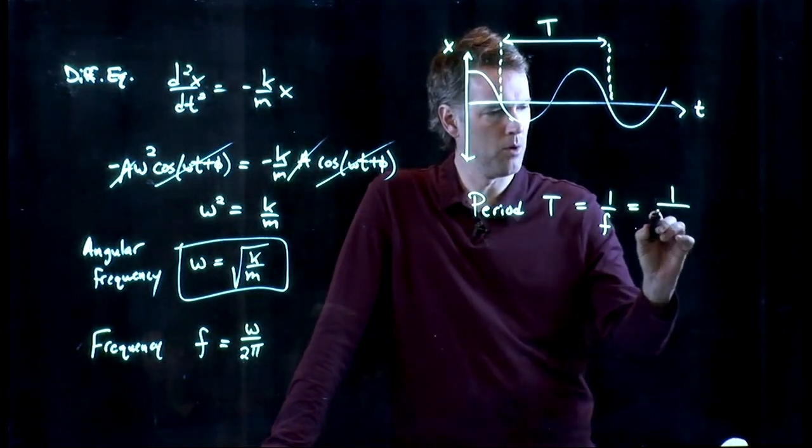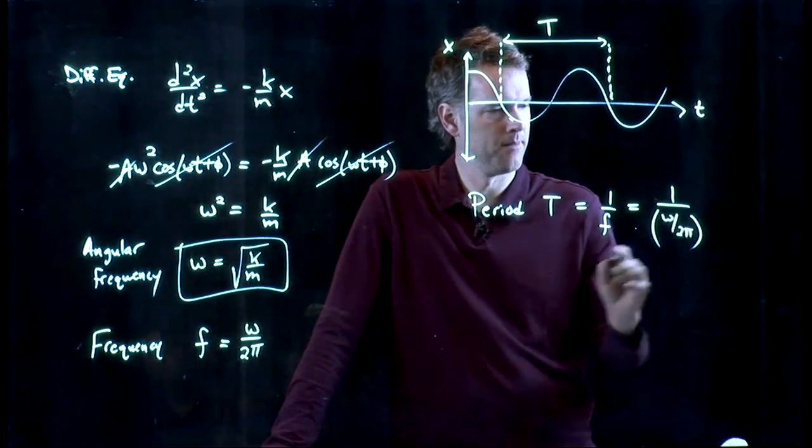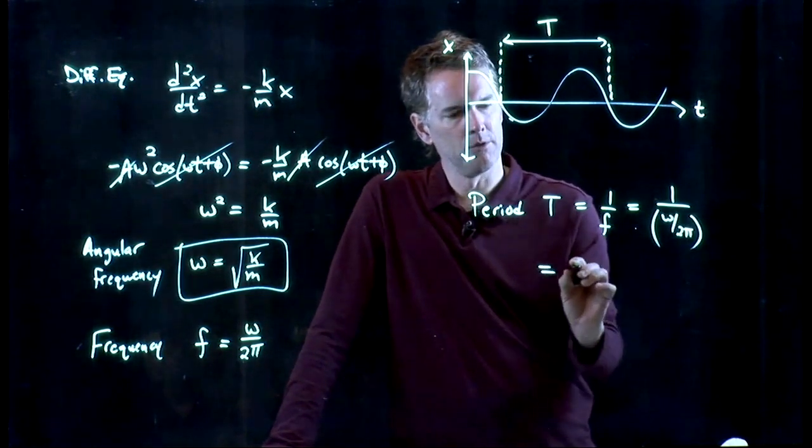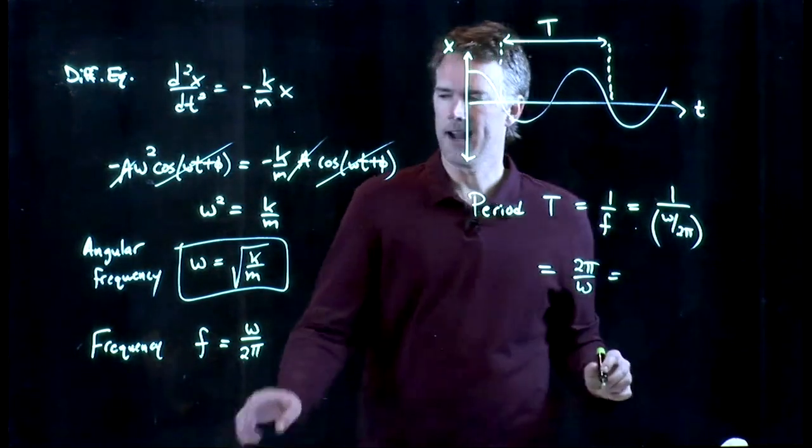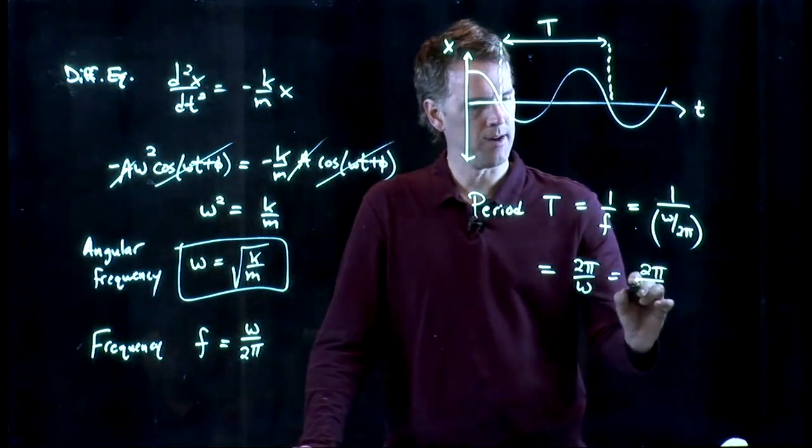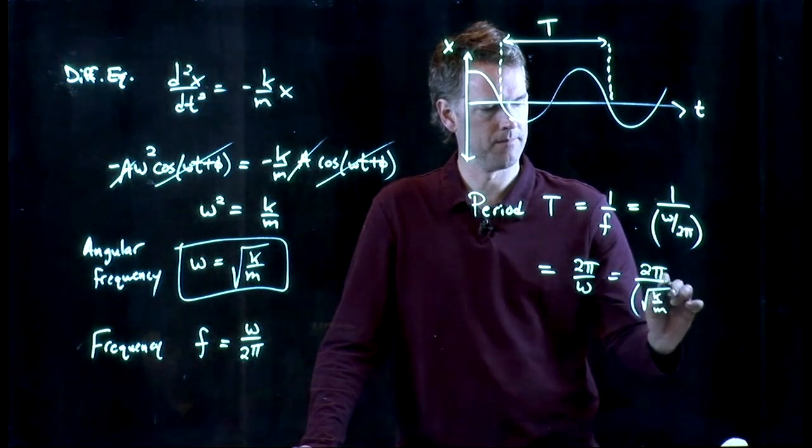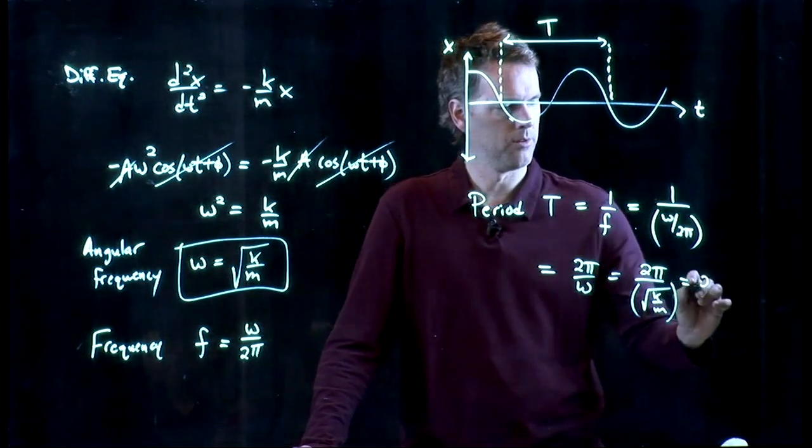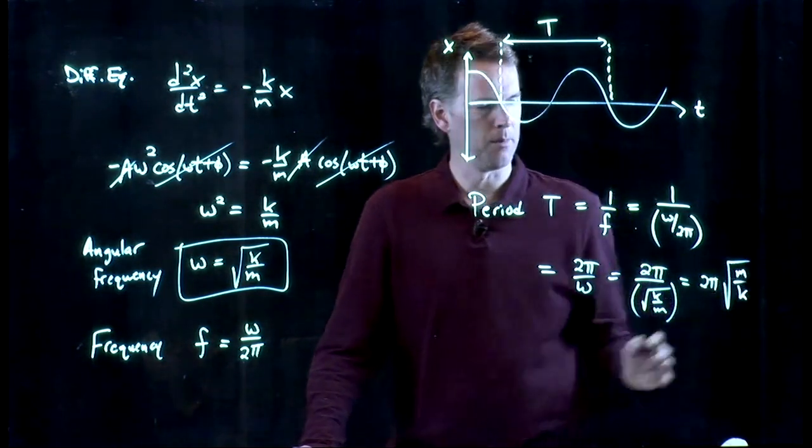We've got 1 over omega over 2 pi, and that becomes 2 pi over omega. But we know exactly what omega is, so this is 2 pi divided by the square root of k over m, or 2 pi square root m over k.